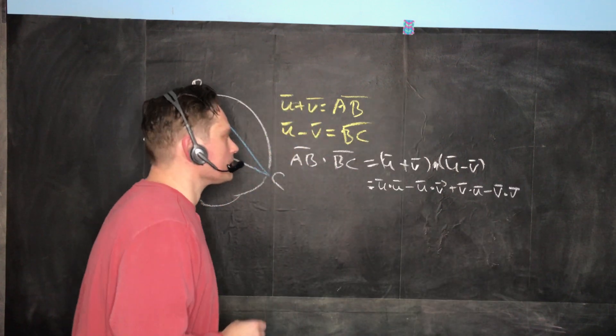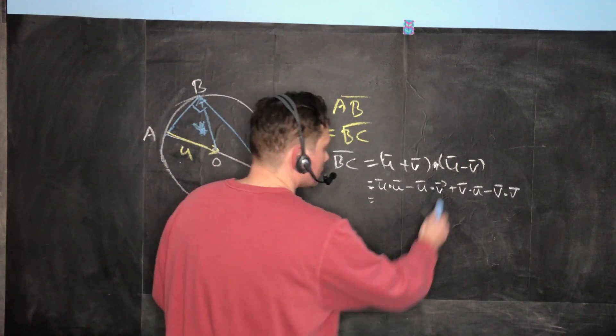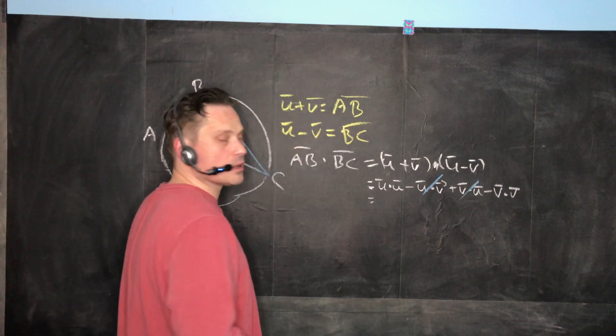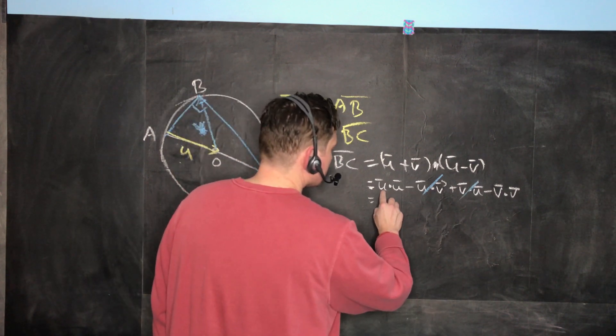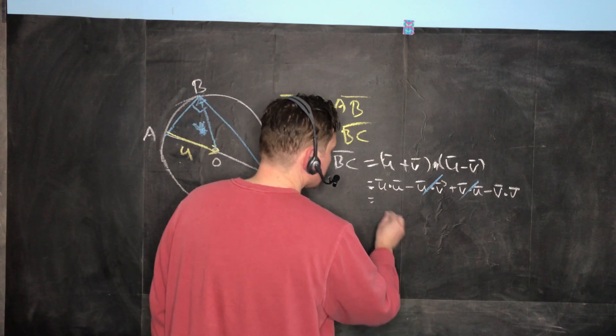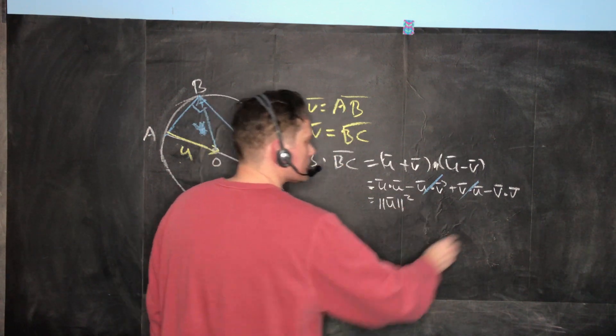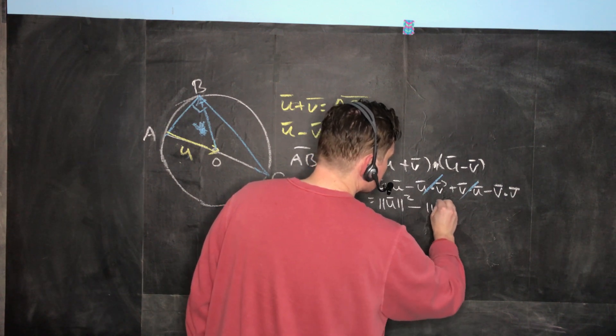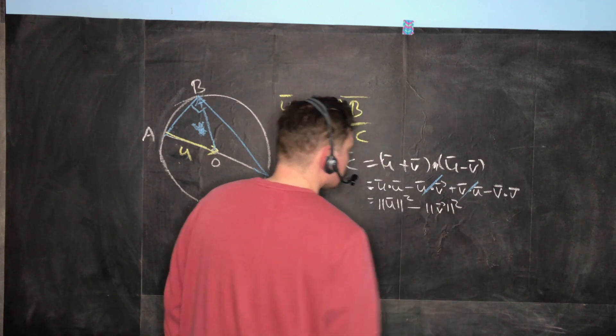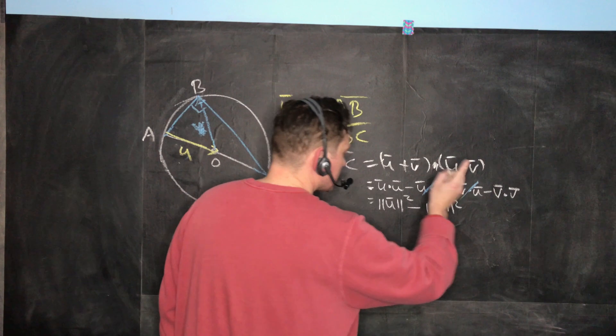Now there's a basic principle that applies here, of course. And this still cancels with this, they're opposite in sign. And then vector dotted with itself, it's the magnitude of the vector squared. And the same thing over here, minus the magnitude of the vector V squared.